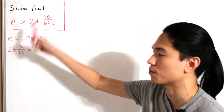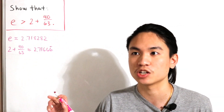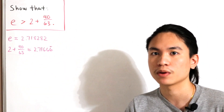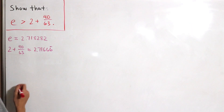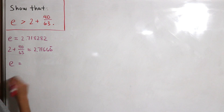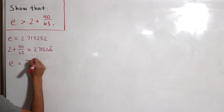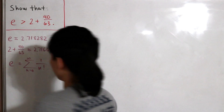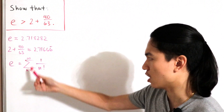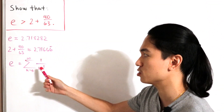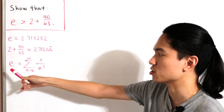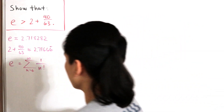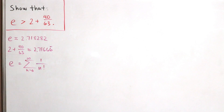We take the series definition of our mathematical constant e, which is equal to the infinite sum starting at n equals 0 of 1 divided by n factorial. Recall that the exponential function e to the power x has the infinite series representation of x to the power n divided by n factorial. Plugging in x equals 1 gives us the series representation for e itself.